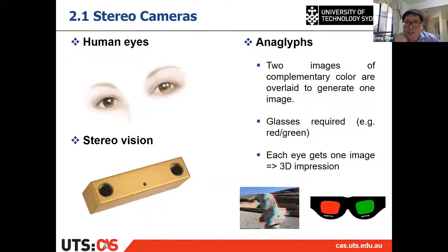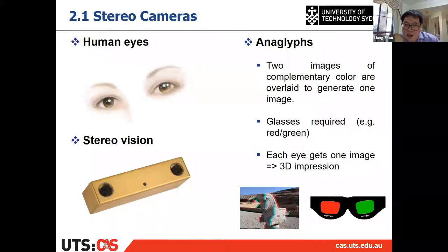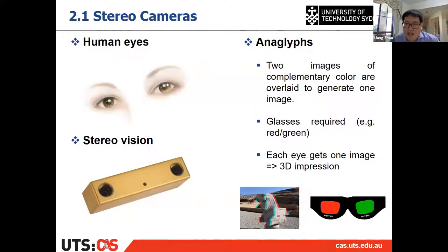Why do we have two eyes? Because if you have only one eye, you can't get the depth of the object — you can't get the distance of the object. But if you have two eyes, then you can perceive depth.